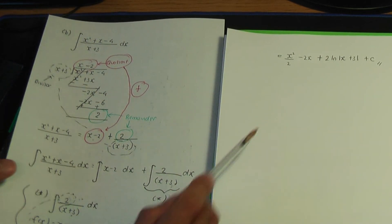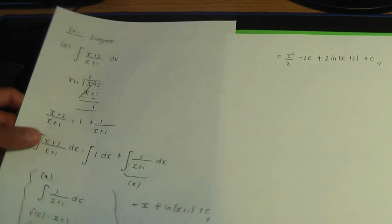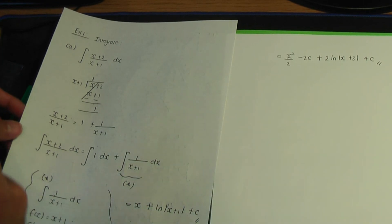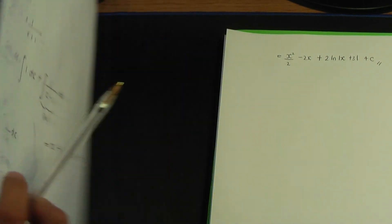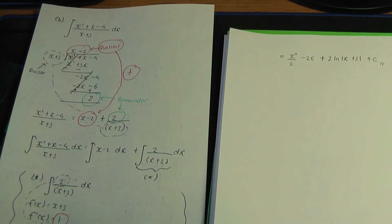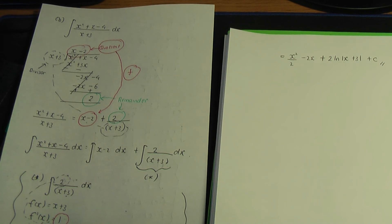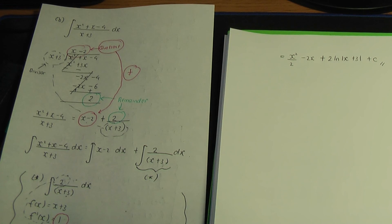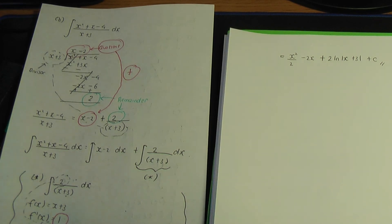Those are the steps for examples 1a and 1b. The key point is: if you have improper fractions, algebraically divide first and then integrate. I hope you enjoyed this video — a like is very much appreciated. Do practice related problems and I hope to see you again. Thank you.